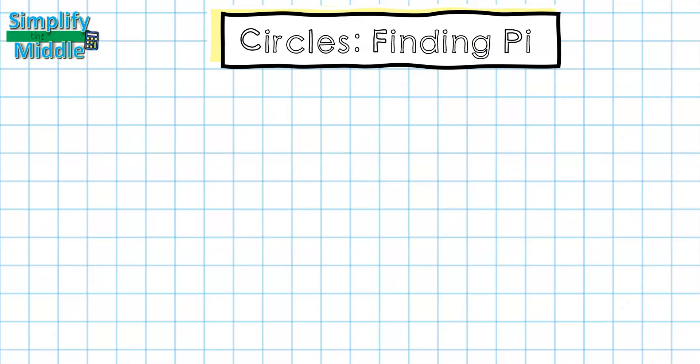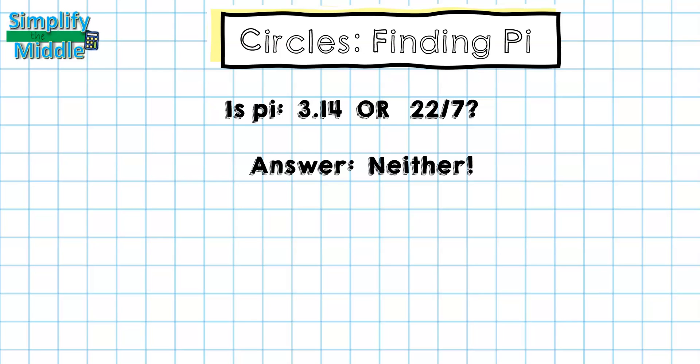So let's be clear. Is pi 3.14 or is it 22 sevenths? The answer is that it's actually neither.